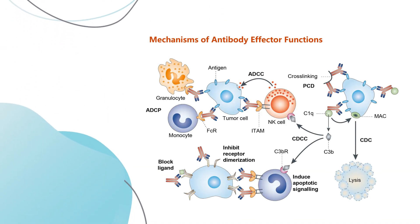Antibody effector functions are an important part of the humoral immune response and form an essential link between innate and adaptive immunity. Most of these effector functions are induced via the FC region of the antibody, which can interact with complement proteins and specialized FC receptors. The latter can induce activating or inhibitory pathways depending on the type of receptor, and are found on B cells and most innate immune cells in various combinations. The most well-known FC-mediated antibody effector functions are antibody-dependent cell-mediated cytotoxicity (ADCC), antibody-dependent cellular phagocytosis (ADCP), and complement-dependent cytotoxicity (CDC).